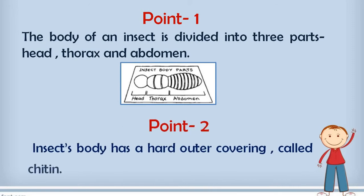Point number 2 is about the chitin. Insects body has a hard outer covering called chitin. Insect ke body ke andar koi bhi bones nahi hoti because they are having the chitin, a hard outer covering.